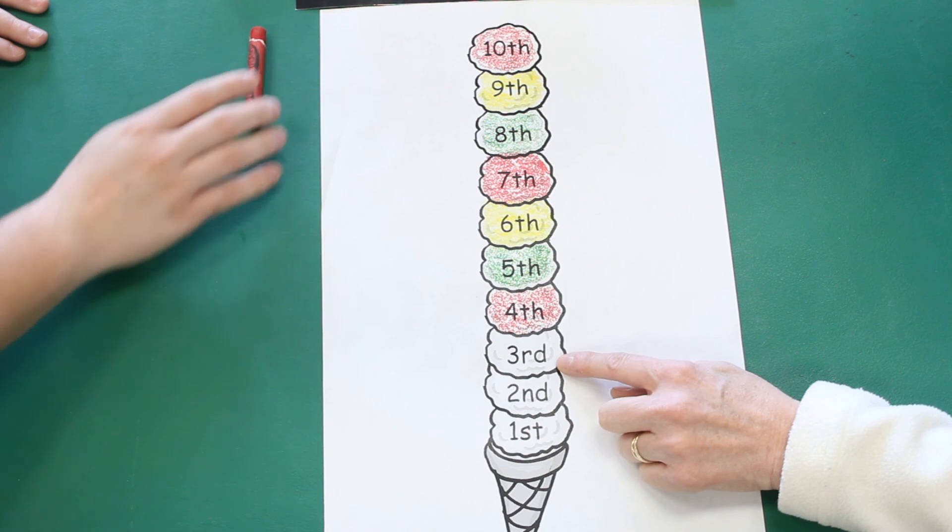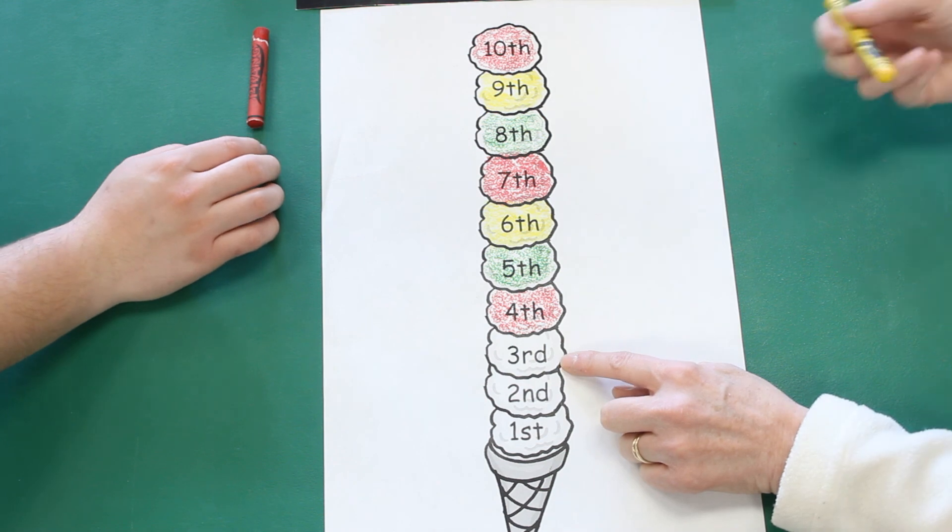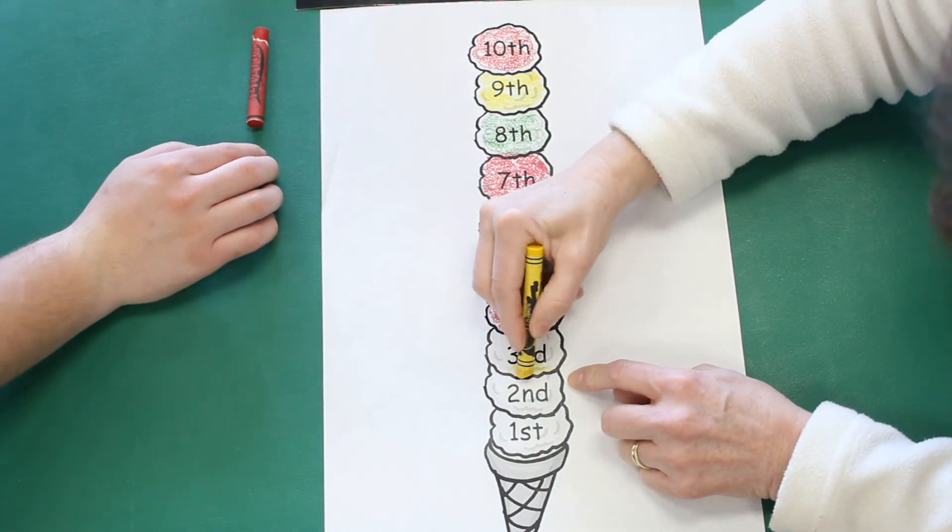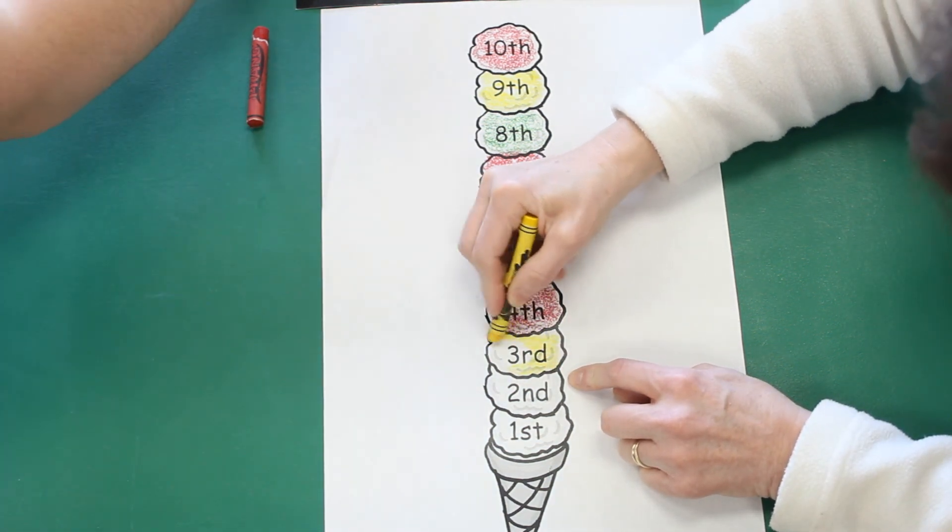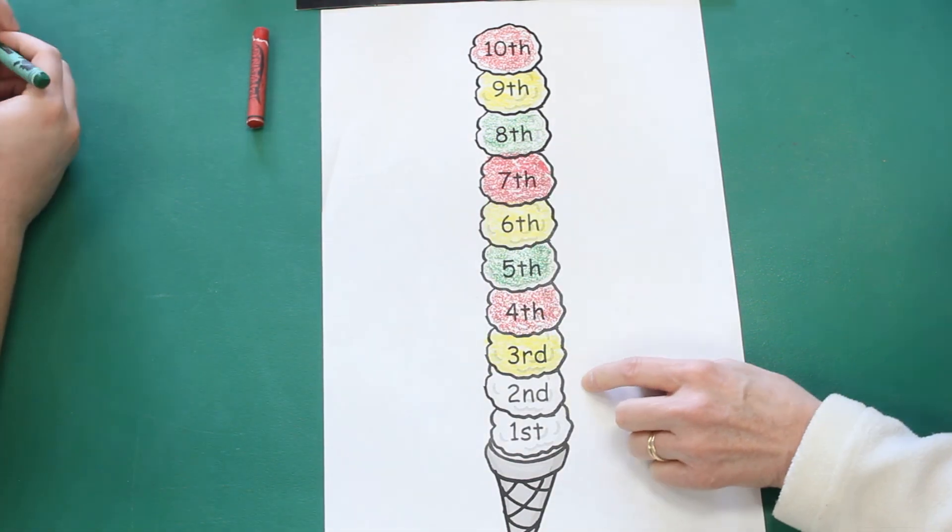Does that mean the third scoop of ice cream should be yellow? I do believe it is. It should. The third scoop should be yellow.